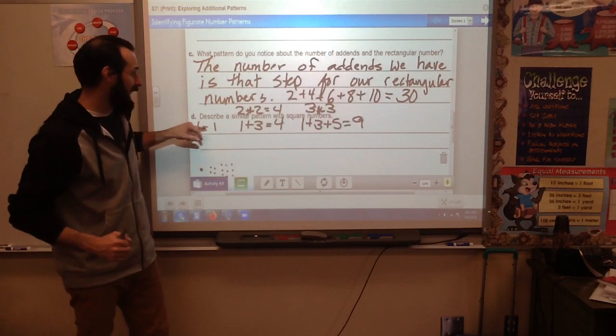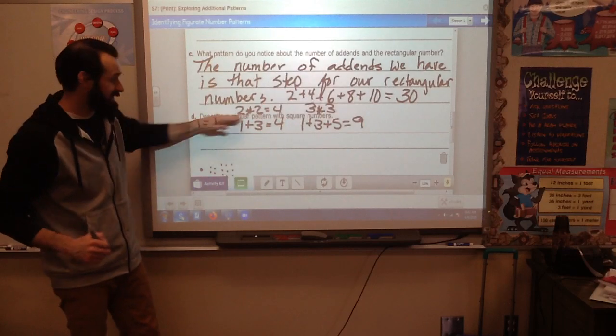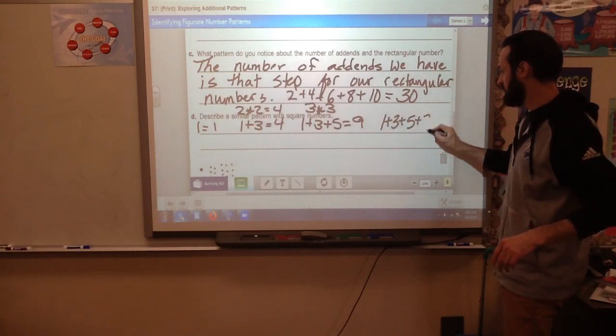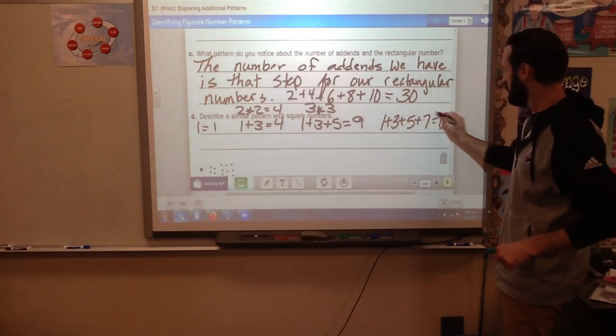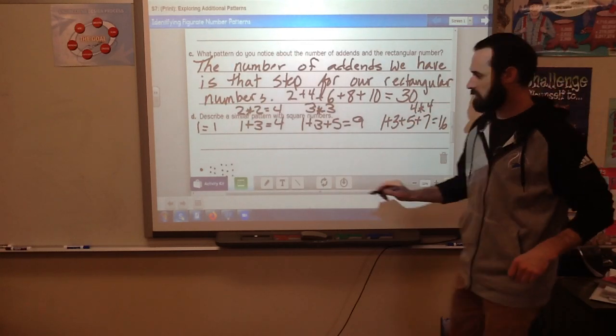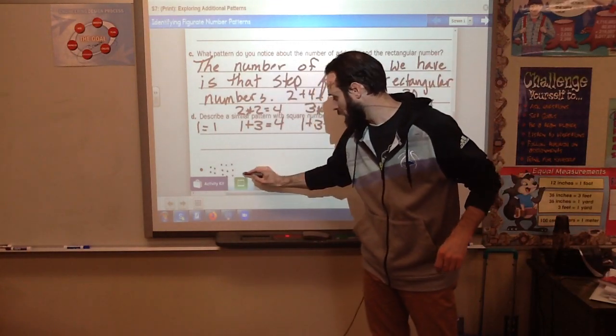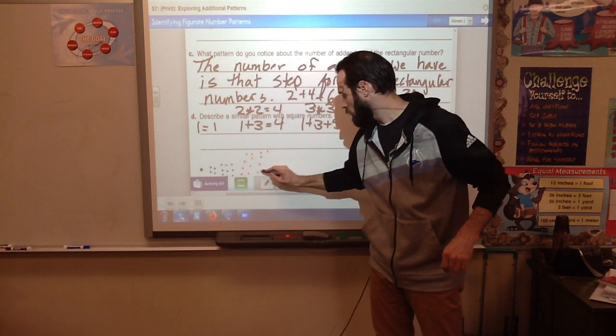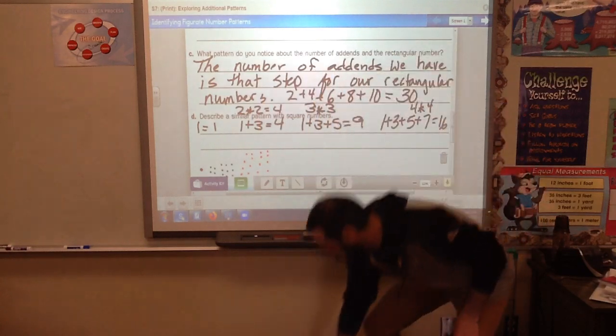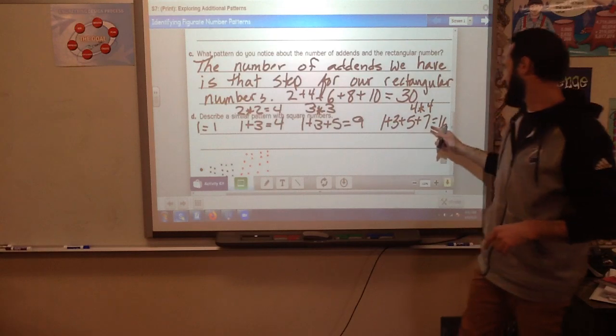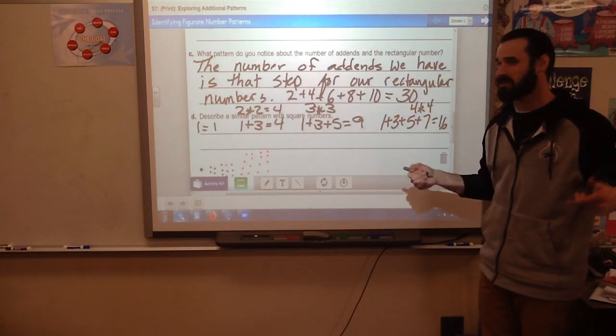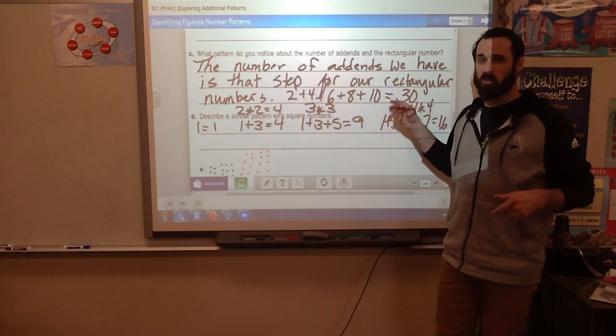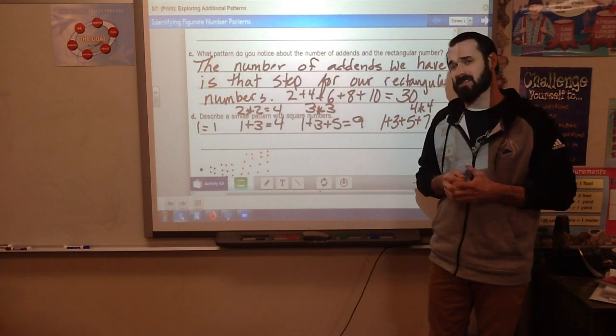If you notice, this time we're adding odd numbers. The next one would be 1 plus 3 plus 5 plus 7, and 9 plus 7 is 16. 4 times 4 is 16. And believe me, it would continue on. The next one you'd add 9, that would get you to 25. 5 times 5 is 25, so it would be a 5 by 5 array. With odd numbers, when you add each subsequent odd number, you get a square number, and a square number just makes a square array.